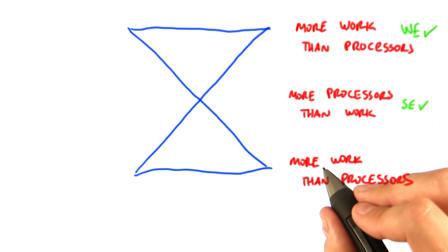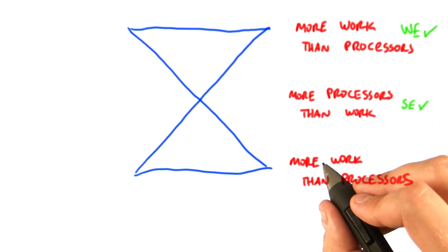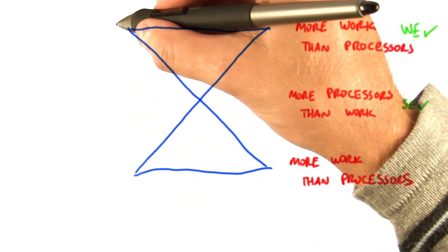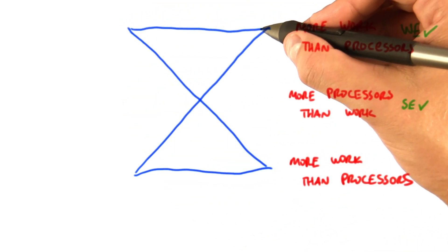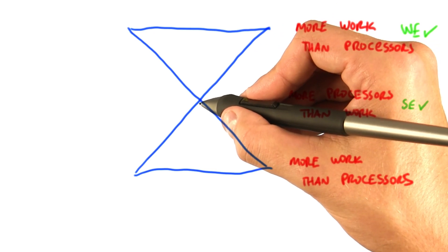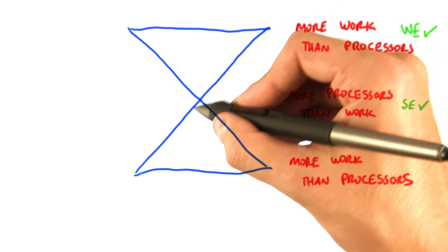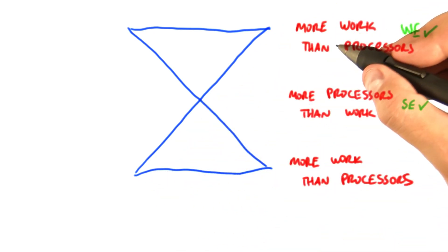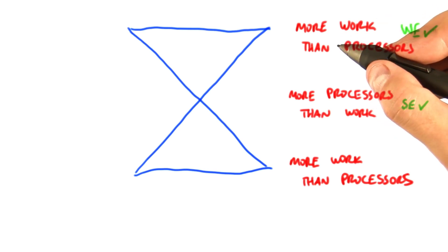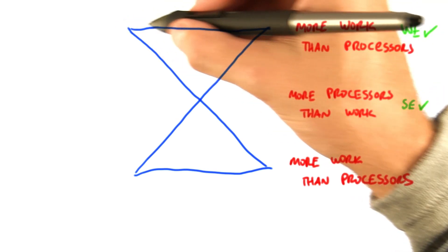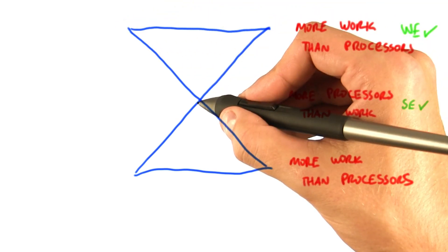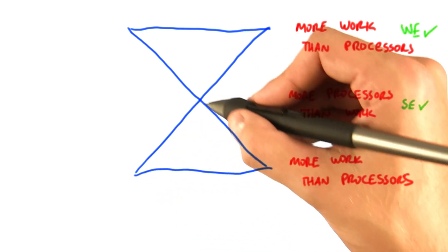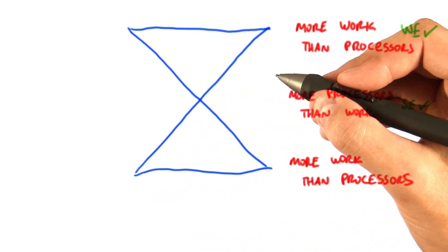There are a number of interesting parallel algorithms that have a pattern that looks like this: you start off with a lot of work, narrow down to not very much work, and then widen back out to a lot of work. An example of this is the Blelloch scan that we just looked at — you start reducing with a large number of items, get down to a small number of items, and then during the down sweep you widen out to a large number of items again.